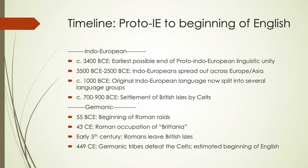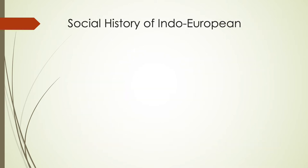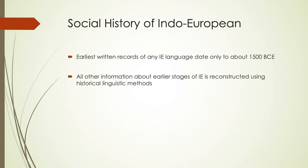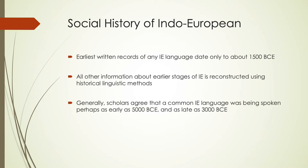The earliest written records we have only date to about 1500 BCE, so there's not a lot of written records of Indo-European prior to that. The other information we have is through historical reconstruction through comparative methods. Most scholars agree that there was a common Indo-European language spoken possibly as early as 5000 BCE and likely as late as 3000 BCE when the different branches of settlers began to move into different places across Europe and Asia.